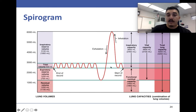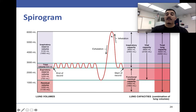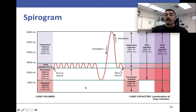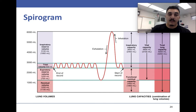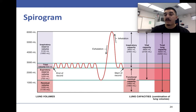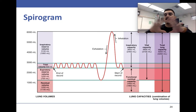Here is a spirogram. The lines in the middle represent tidal volume — regular breathing. When you take a big inhalation, that's your inspiratory reserve, taking in a lot of oxygen. When you exhale forcefully, that's your expiratory reserve. You still have residual volume left over after maximum exhalation. The spirogram helps determine breathing averages in milliliters. Abnormal breathing patterns can indicate problems in the respiratory system, helping doctors narrow down possible causes.